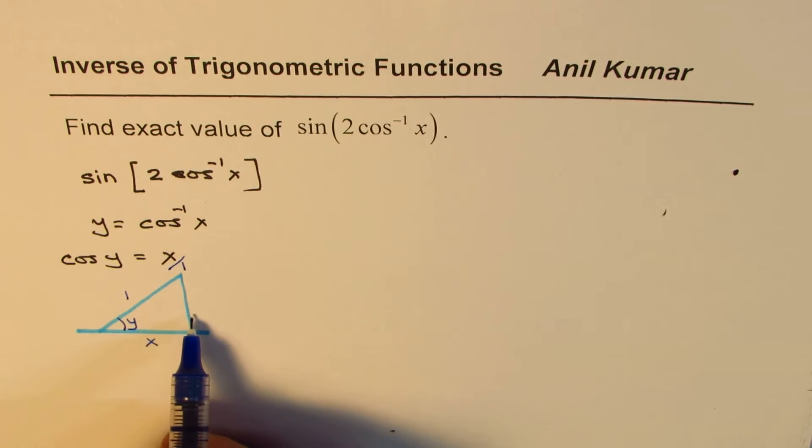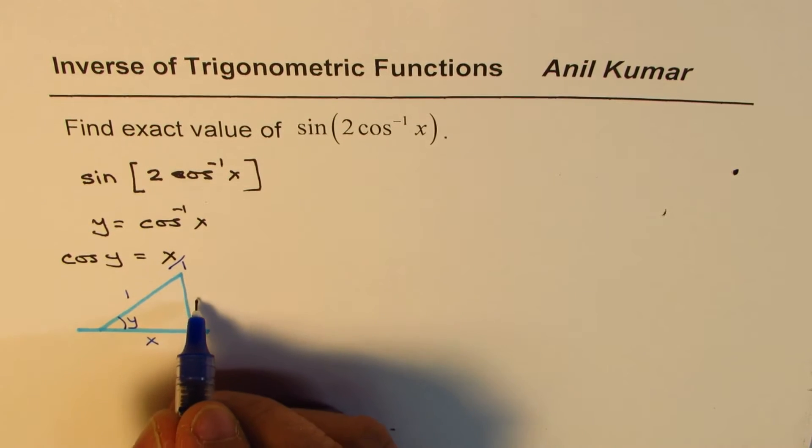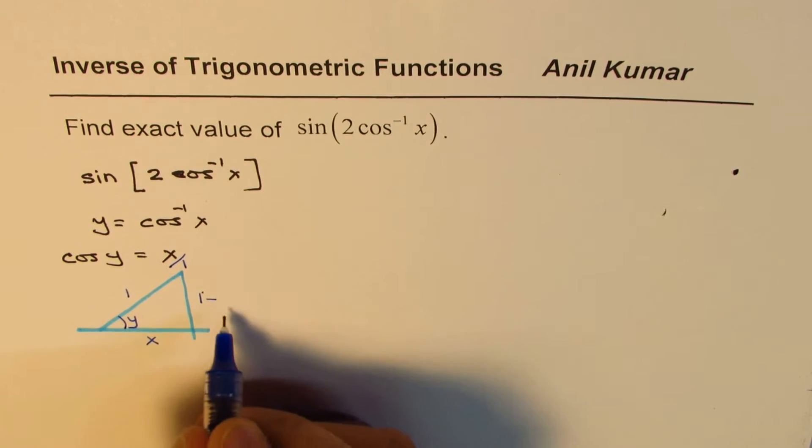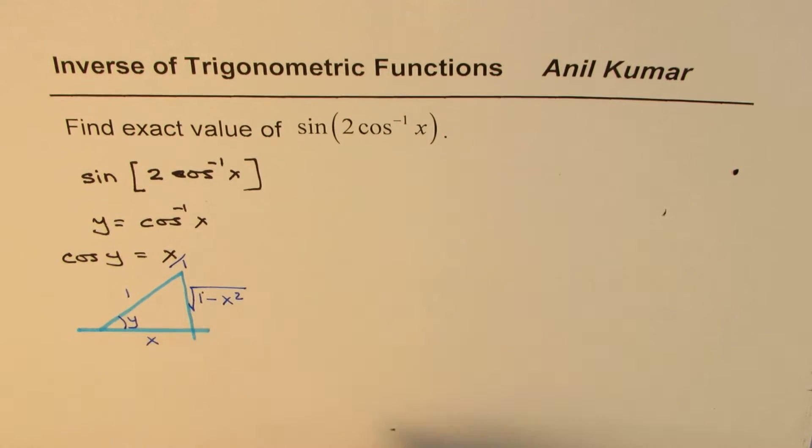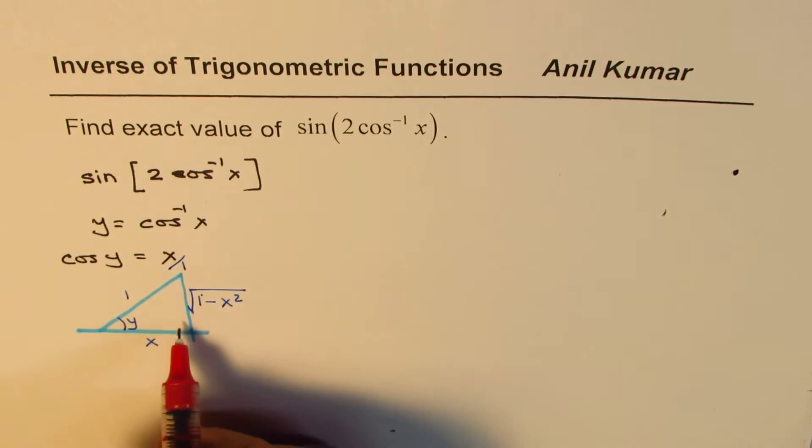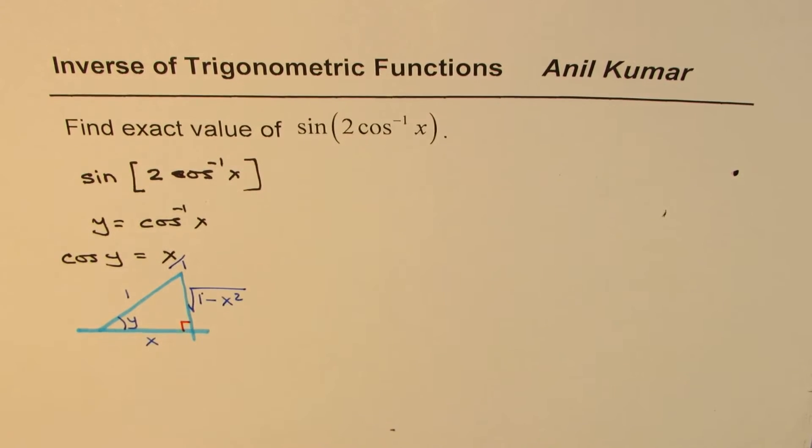Now if that is the case, what is the opposite side? It is √(1 - x²), applying the Pythagorean theorem, since this is a right triangle.